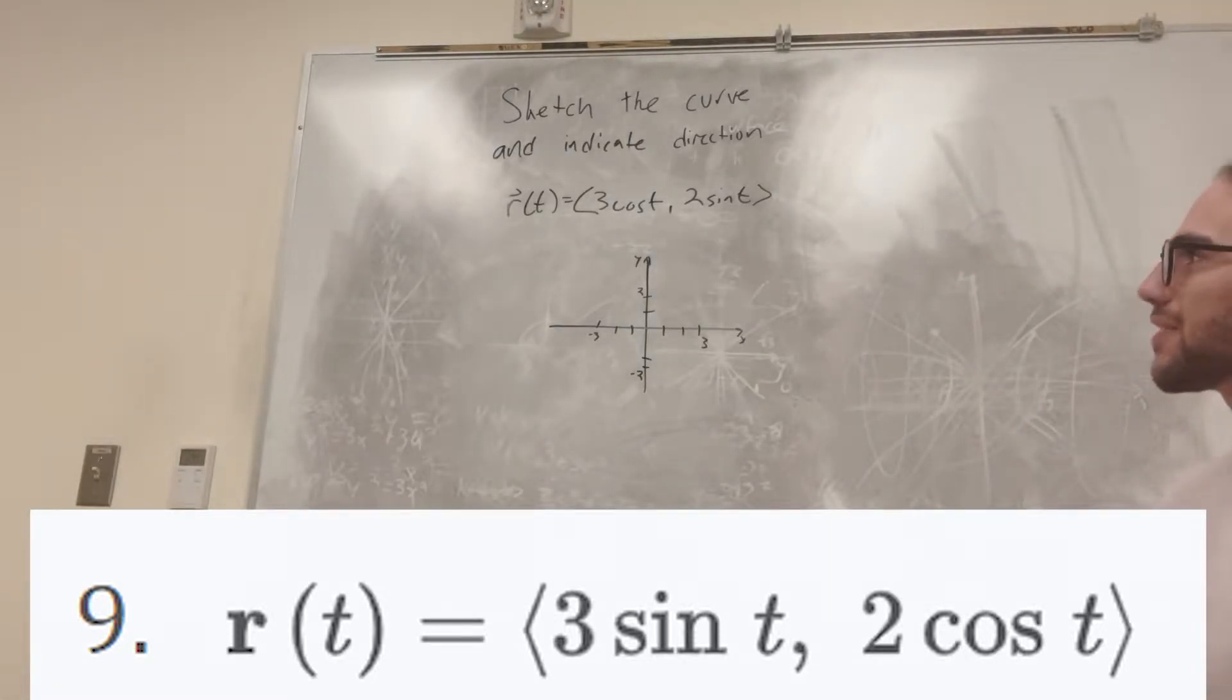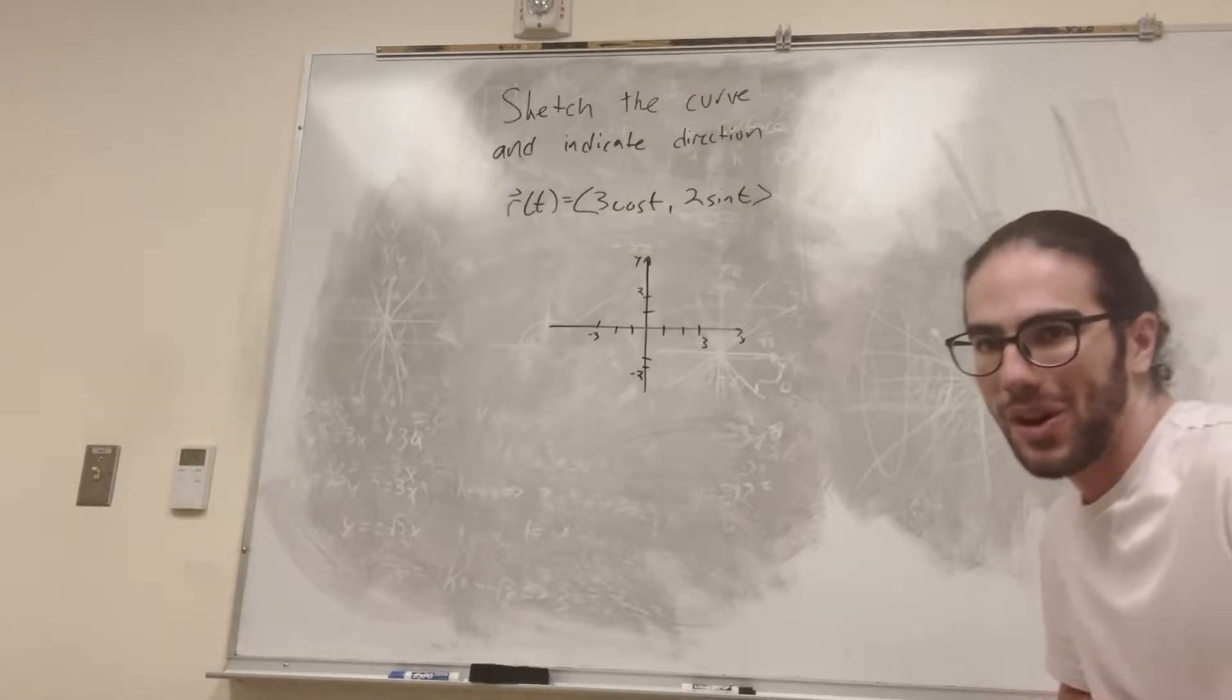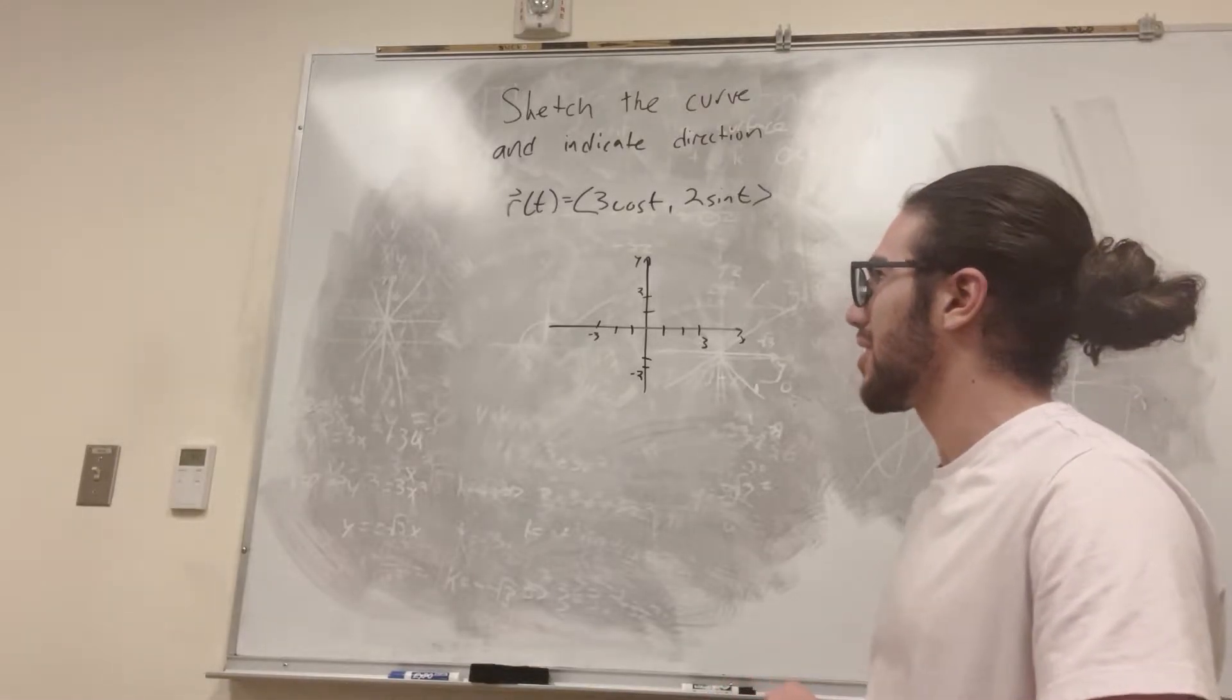So it gives us a vector function, R of t. It says that x is equal to cosine of t and y is equal to 2 sine of t. So as far as I'm aware, the best way of solving these problems is just plugging in values for t that look good.